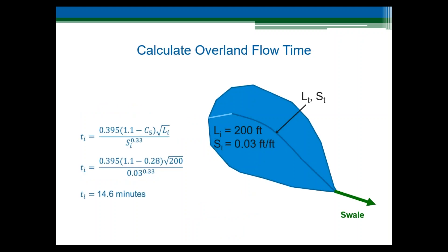After we calculate the runoff coefficients, we're ready to calculate the overland flow time based on the five-year runoff coefficient, the overland flow length, and the slope of the overland flow path. Using equation 6-3 from the Urban Storm Drainage Criteria Manual, with a five-year runoff coefficient of 0.28, an overland flow length of 200 feet, and a longitudinal slope of 0.03 feet per feet, we calculate an overland or initial flow time of 14.6 minutes.